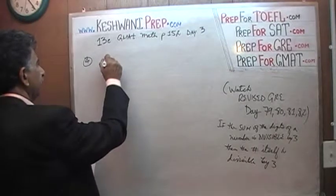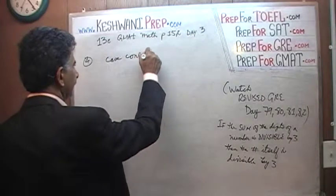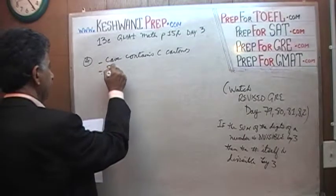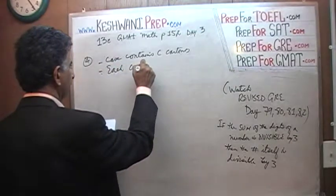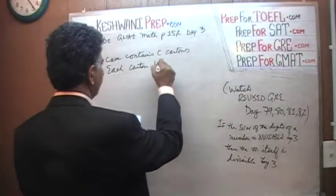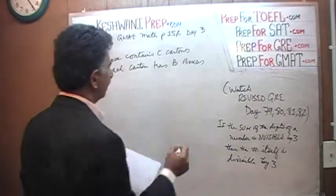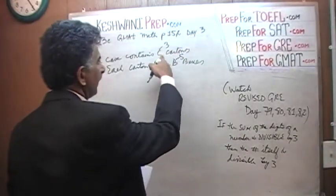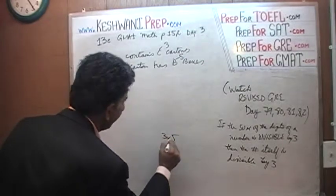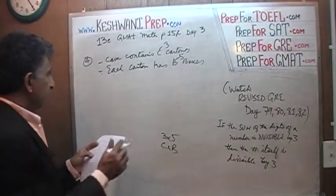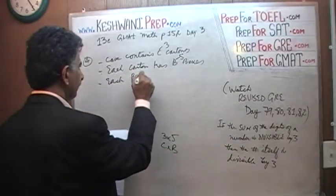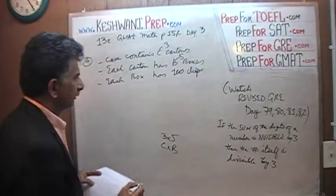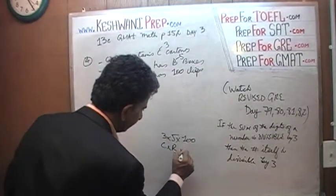Question number 4. We are told that the case contains C cartons. Each carton has B boxes — so there are C cartons and each has B boxes. For example, if C is 3 and B is 5, if there are 3 cartons and each has 5 boxes, it's 3 times 5, or C times B. Then we are told that each box has 100 clips. So if this is how many boxes we have, they each have 100 clips.